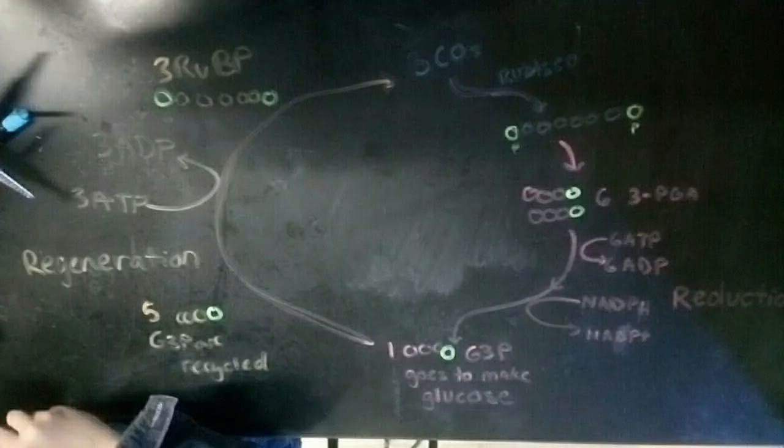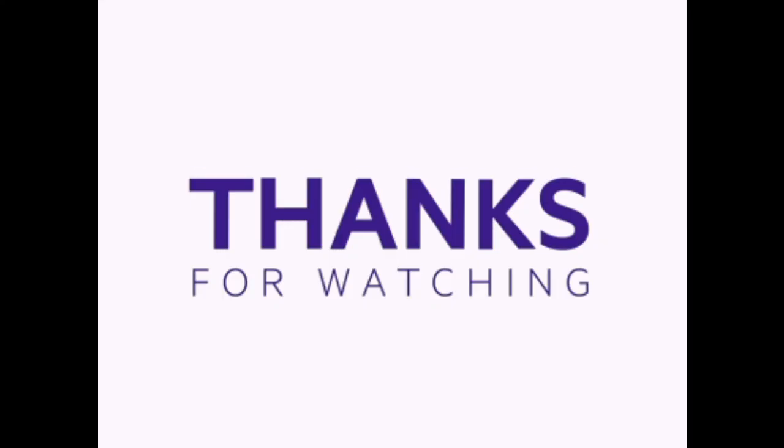ATP becomes ADP, and RUBP is formed. The process then happens over again.